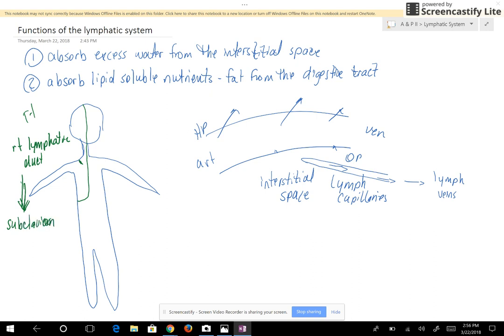The right subclavian vein is going to become the right brachiocephalic vein. The brachiocephalic vein is going to join with the left brachiocephalic vein to make the superior vena cava, and of course the superior vena cava empties into the heart.